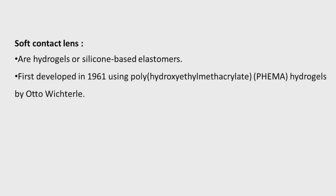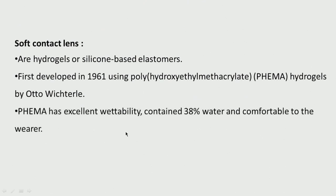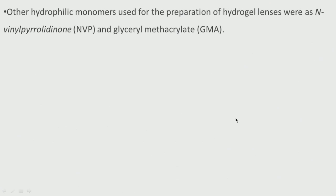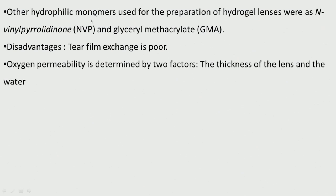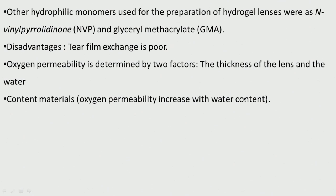Soft contact lenses are all hydrogels or silicone-based materials. Polyhydroxyethyl methacrylate (poly-HEMA) hydrogels were discovered in 1961. They have very good wettability, contain 38 percent water, and are comfortable to the wearer. Other hydrophilic monomers used for hydrogel lenses include N-vinylpyrrolidone and glyceryl methacrylate. One disadvantage is they can get torn. Oxygen permeability — which is very important in contact lenses — depends on the thickness of the lens and the water content, increasing with water content.